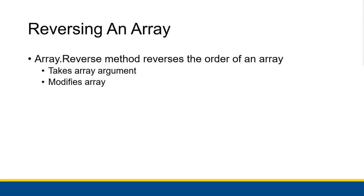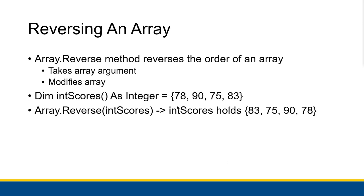There's another method that lets you reverse the order of an array, which is Array dot Reverse. It works exactly the same as Array dot Sort — you give it an array as an argument and it modifies that array in place. So if I take the same int scores array and call Array dot Reverse, it's going to take the original ordering and reverse it. The first element, 78, becomes the last element. 90, the second element, becomes second to last. 75 becomes second element, and 83 becomes the first element — completely reversing the ordering, but it's not sorting, just reversing.